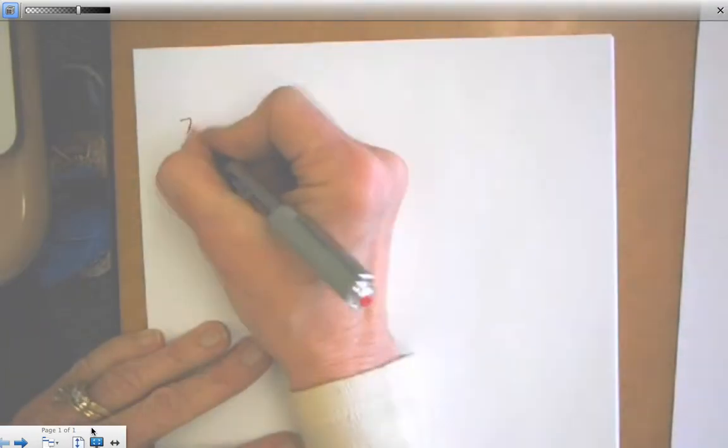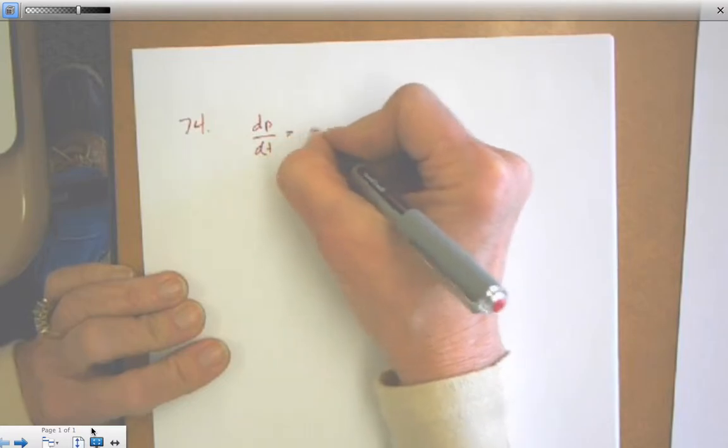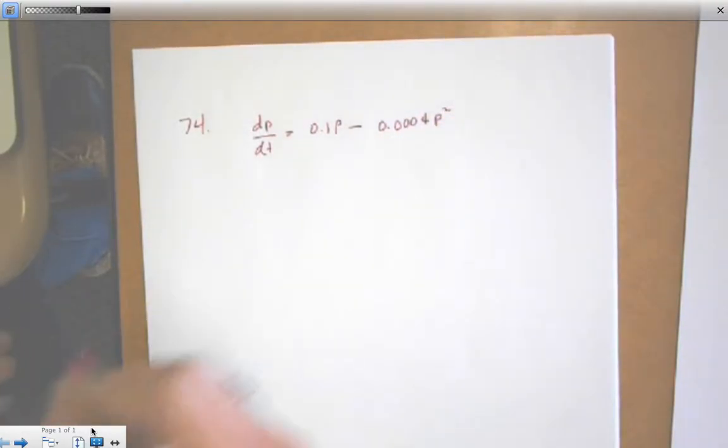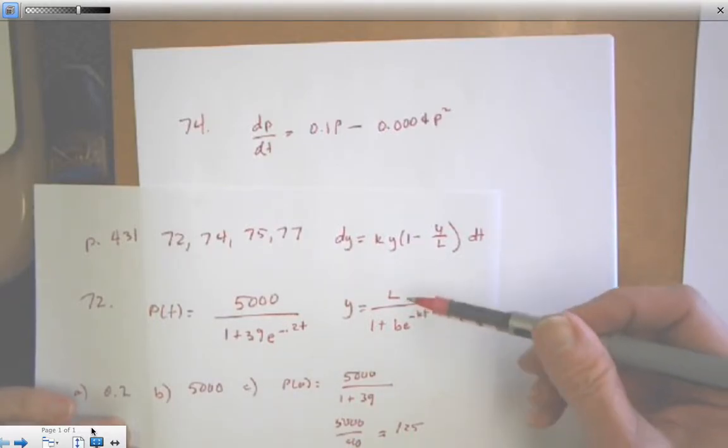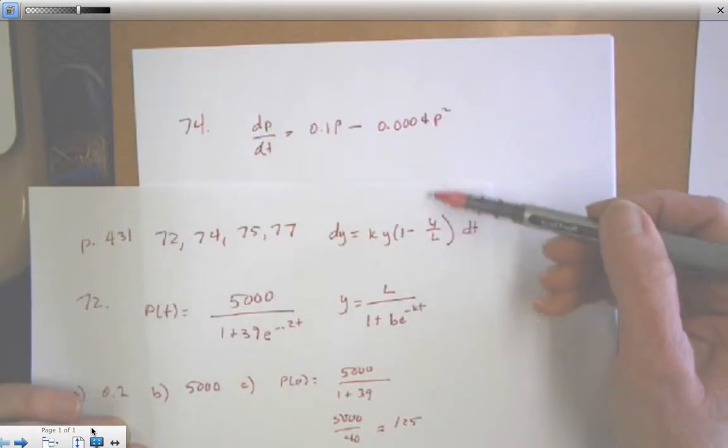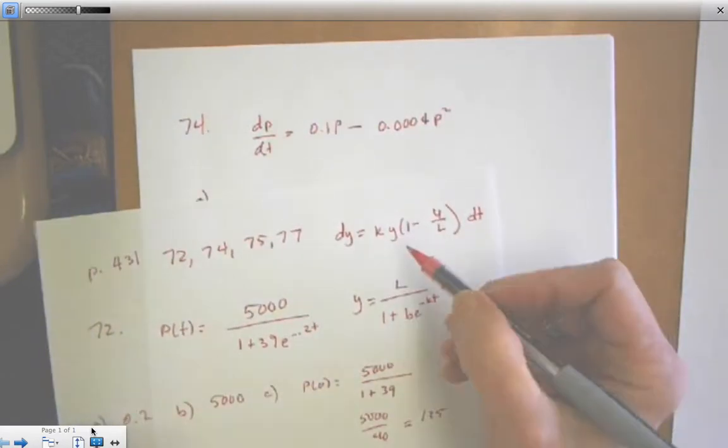Next, we have number 74. 74 starts with the differential equation. And it asks, first of all, to find the value of K and carrying capacity. So it's asking all the same type questions, but it's in differential equation form. So if I'm in differential equation form, I've got to make it look like the solution so I can answer all the pieces. I can find it from the differential equation form, but it doesn't look like the correct differential equation. I'm going to have to put it in its correct form.